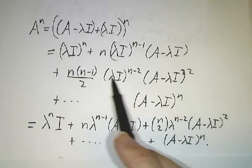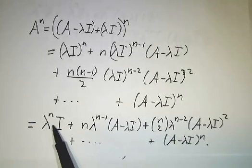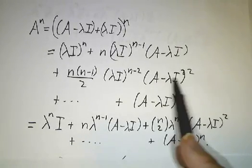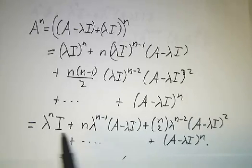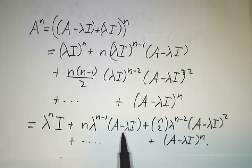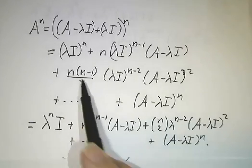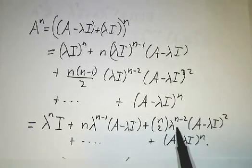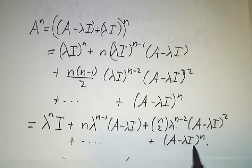And of course, a power of the identity just gives you the identity, and then multiplied by something else gives you something else. So we get lambda to the n times the identity, and n lambda to the n minus 1 times 1 power of A minus lambda I, and n choose 2, that's n factorial over n minus 2 factorial, 2 factorial, or n times n minus 1 over 2, lambda to the n minus 2, A minus lambda I squared, and then you have all the way down.